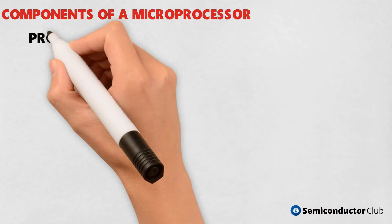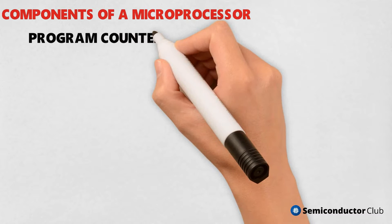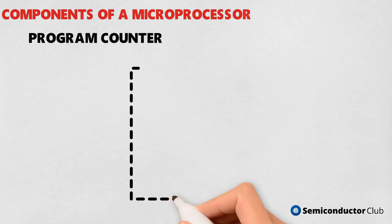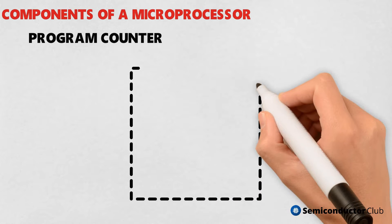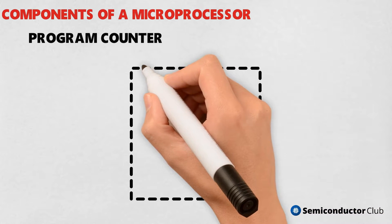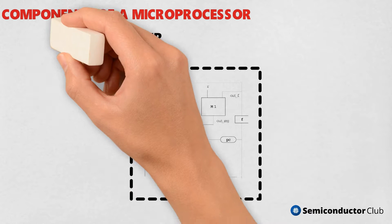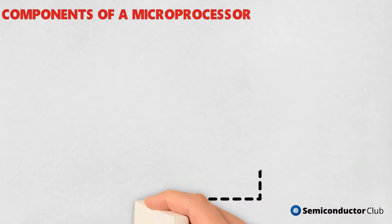Program Counter, PC. It is a 16-bit special-purpose register. It is used to hold the address of memory of the next instruction to be executed. It keeps track of the instructions in a program while they are being executed. The microprocessor increments the content of the program counter during the execution of an instruction so that at the end of the execution it points to the next instruction's address in the program.